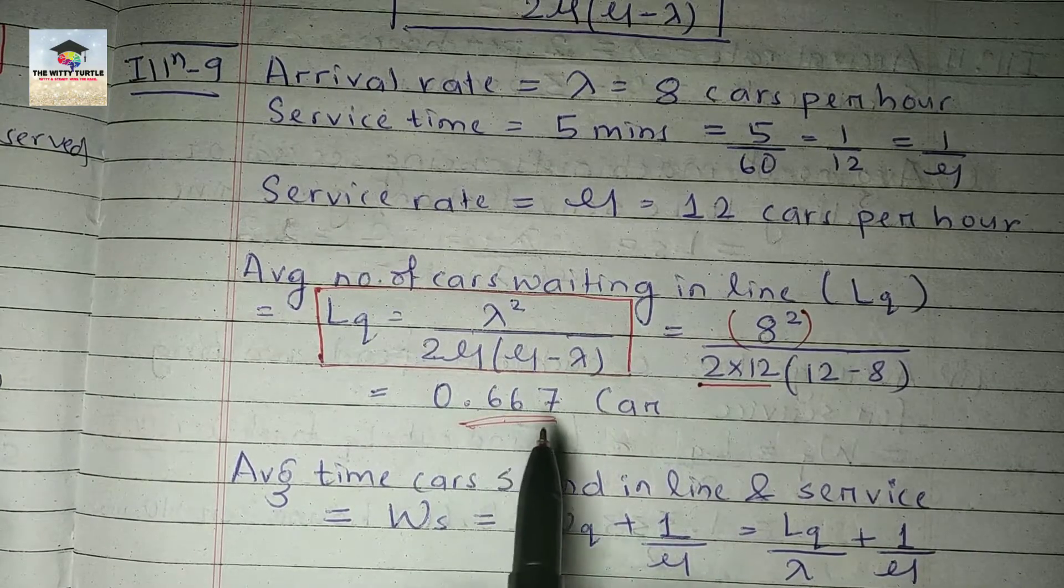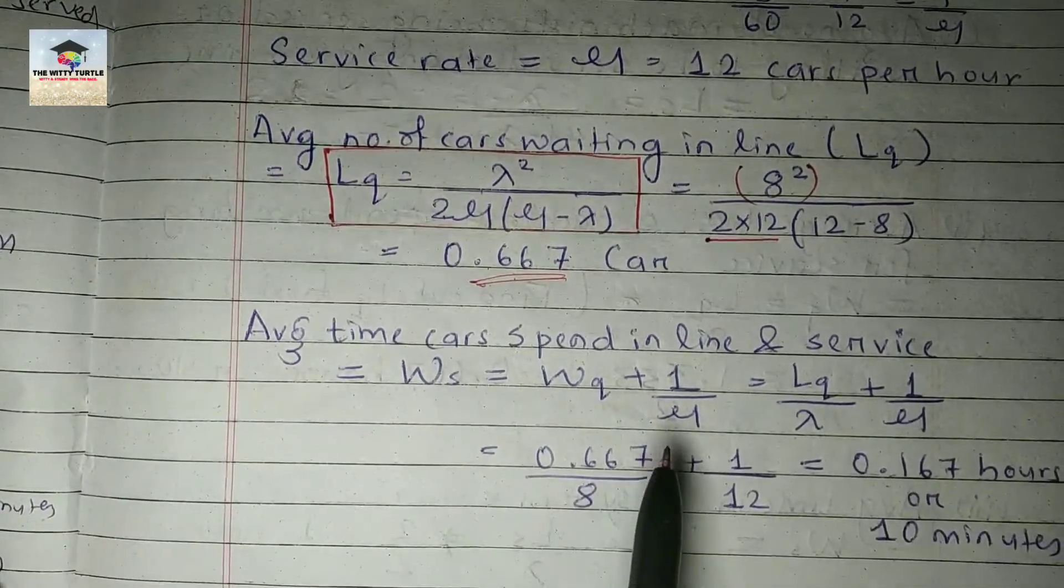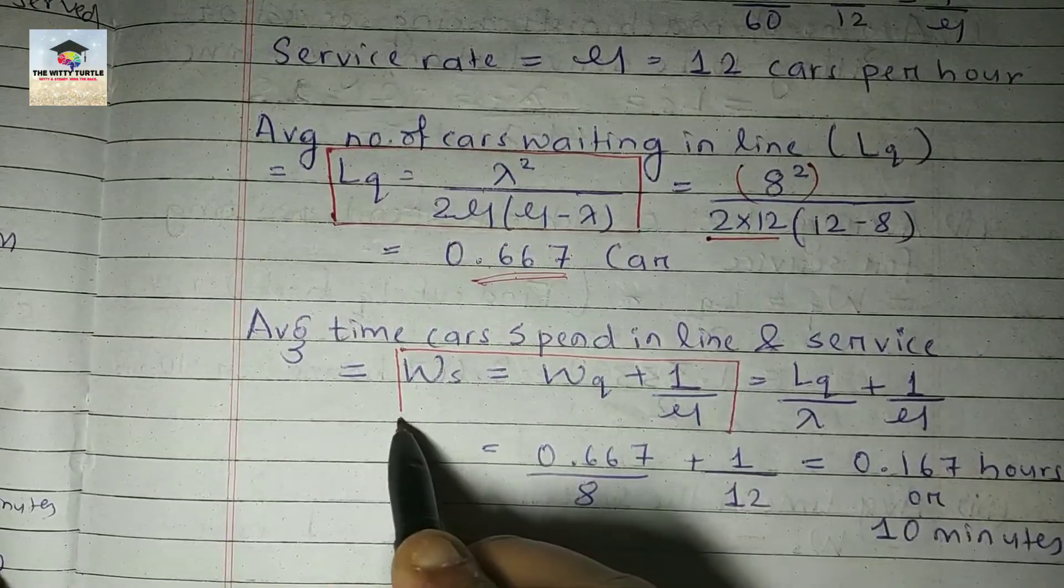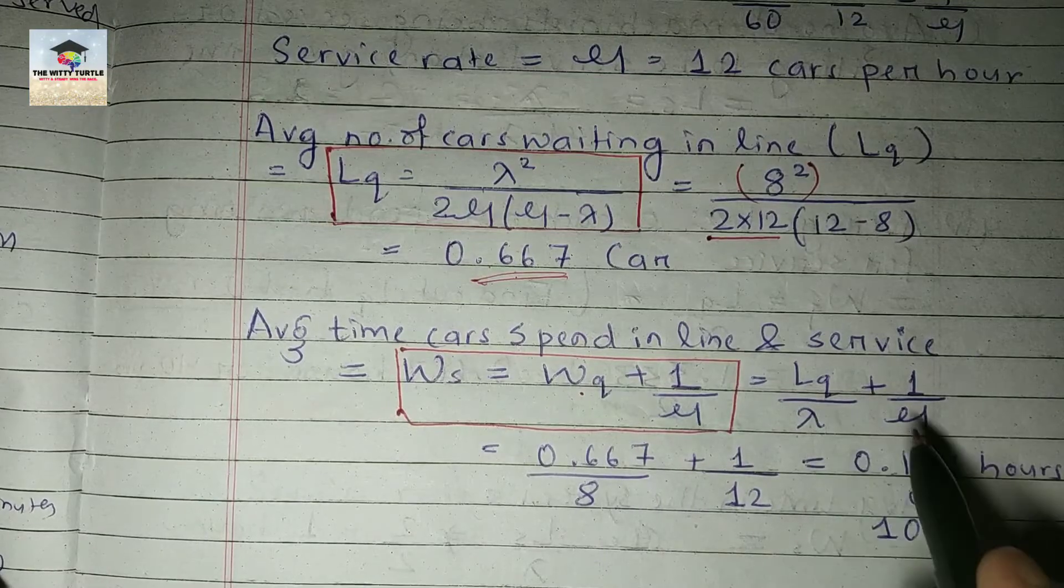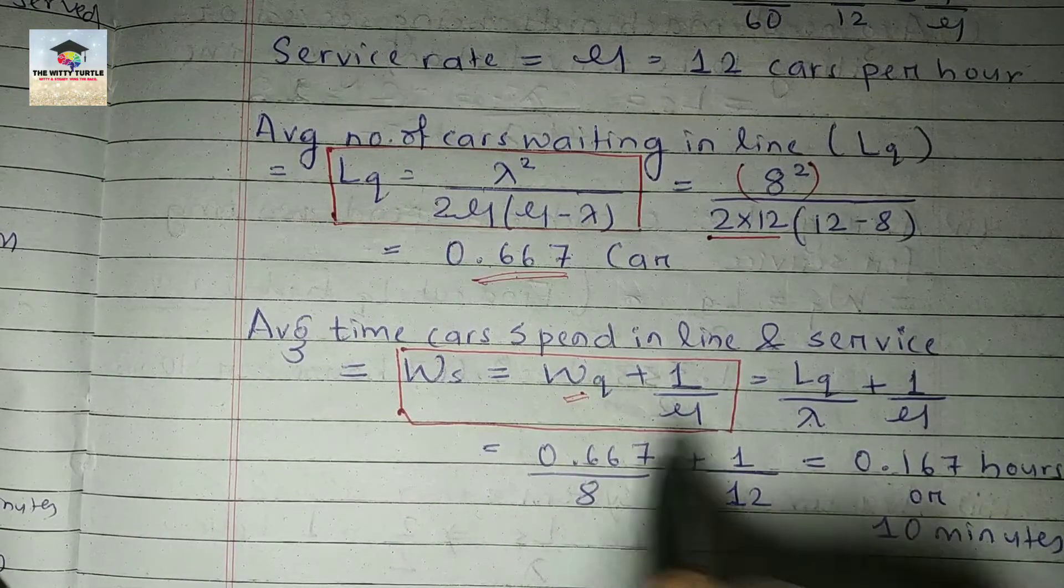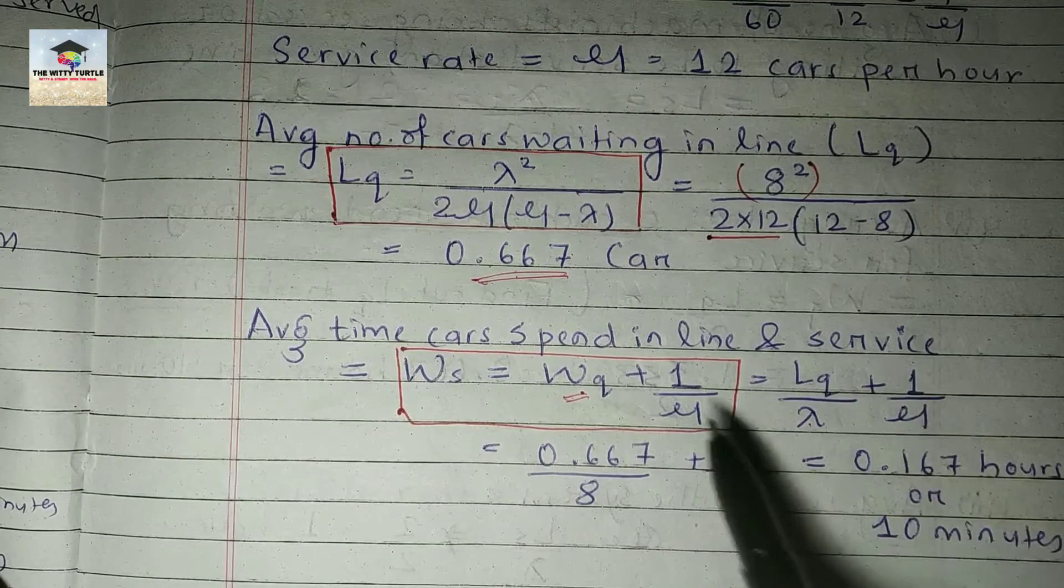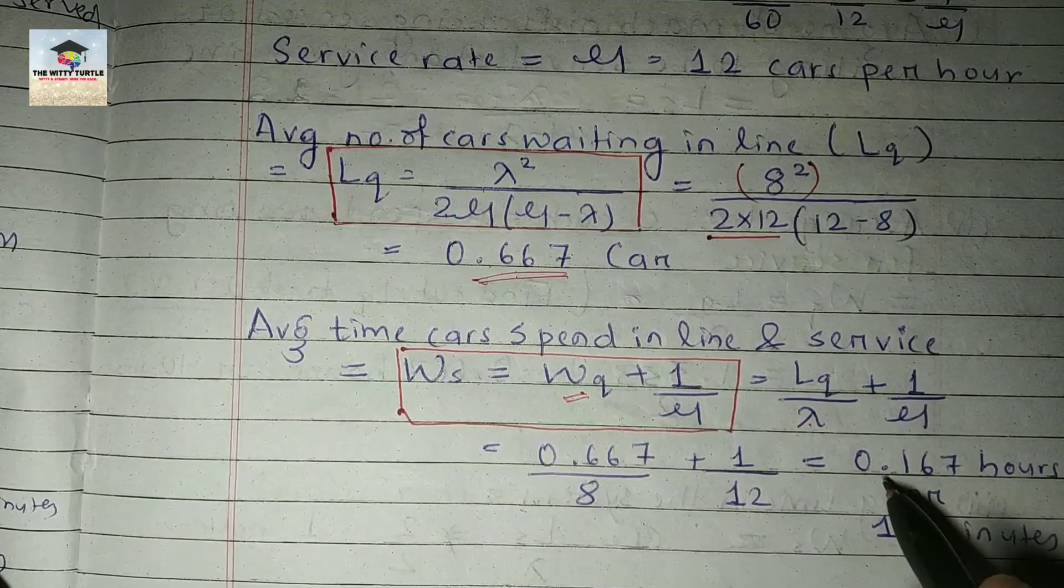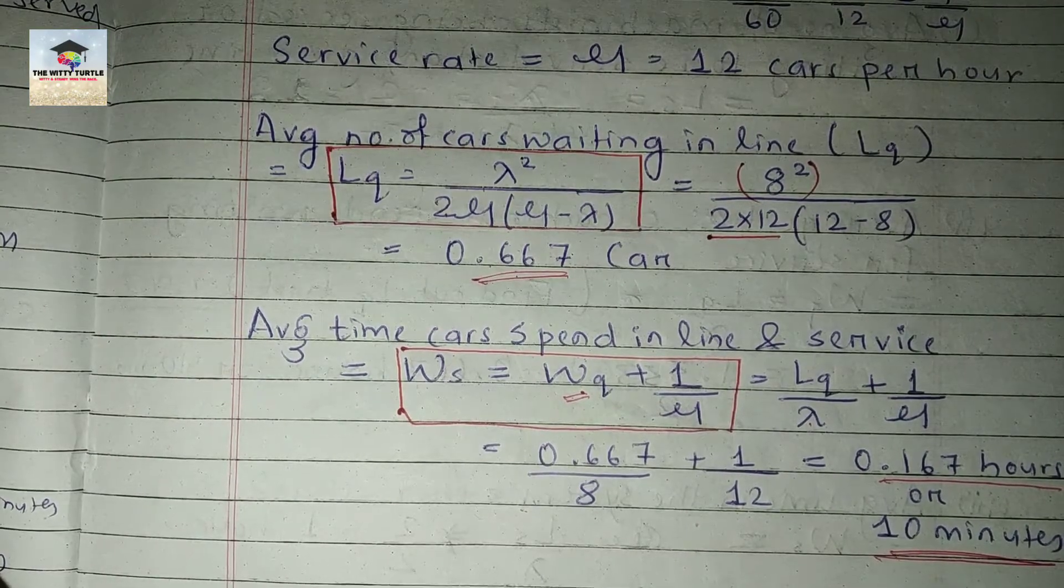Now the average time the cars are spending in line and service. So the formula for this is Ws equals to Wq plus 1 by mu. So it will be what? Wq equals to Lq by lambda—we can write Lq by lambda instead of Wq because we know this is the formula for Wq—and then we have to add 1 by mu. So after calculating this we can get the answer as 0.167 hours or that simply comes as 10 minutes. I hope this question is clear.